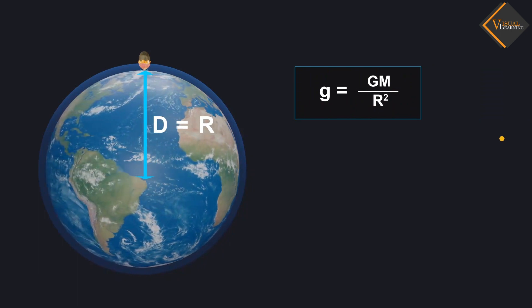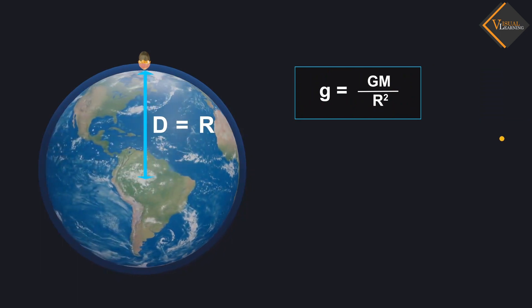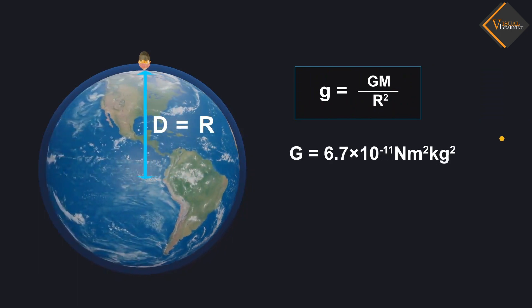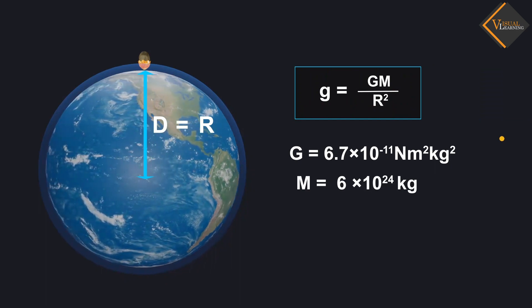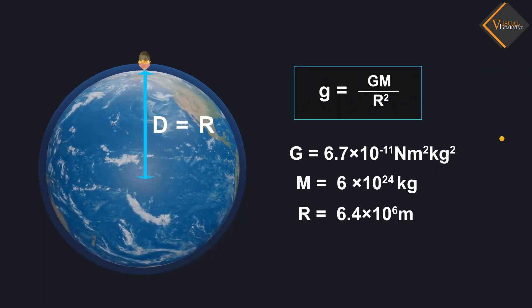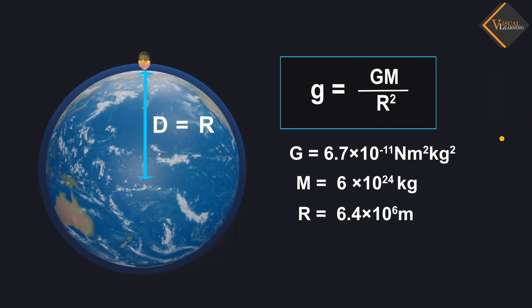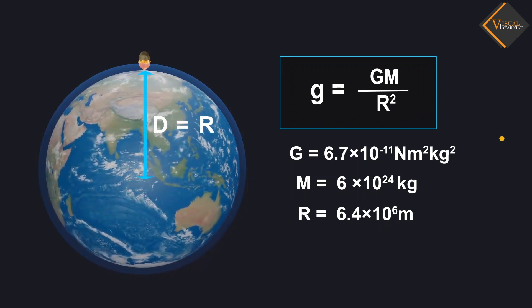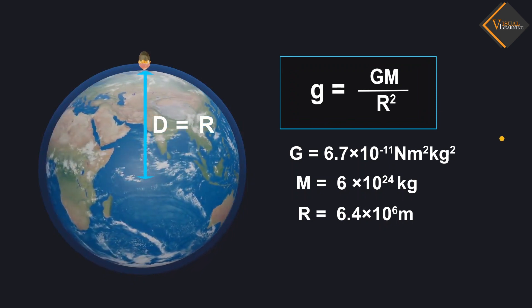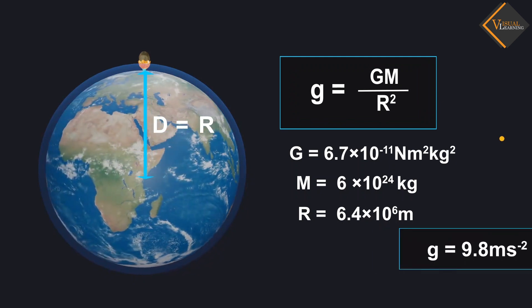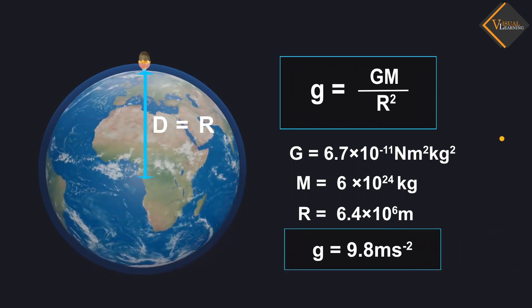To calculate the value of g, we should put the values of G, M, and R. Thus, the value of acceleration due to gravity of the Earth will be 9.8 meters per second squared.